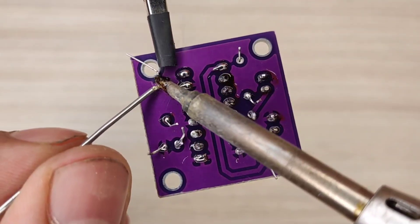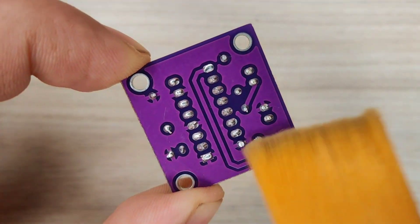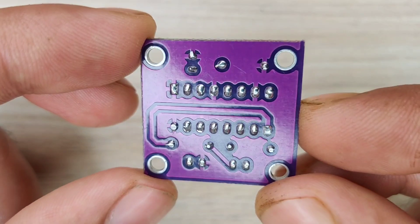And after spending some time with the soldering process, I cleaned the PCB with isopropyl alcohol. And here our PCB is looking nice and clean.